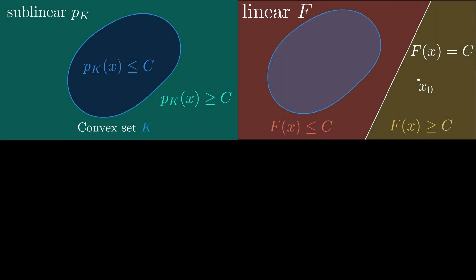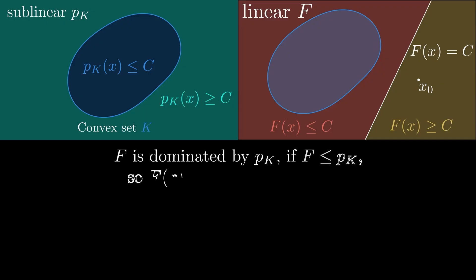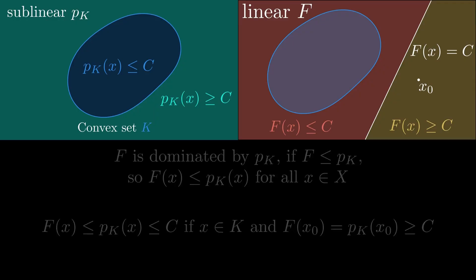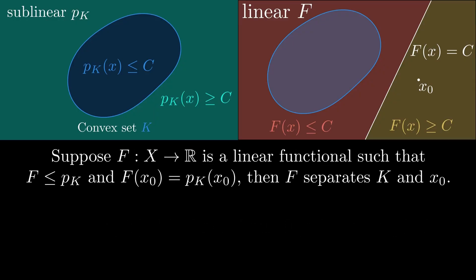Now let's connect these two concepts. We say that a sublinear functional dominates a linear functional if this inequality is satisfied. When we plug in a point in the convex set, we see that this inequality already implies that the convex set is on one side of the hyperplane induced by the linear functional. We only have to guarantee that the point is on the other side. We can do this by requiring that the value of f at x₀ equals the value of p_K at x₀. Since the point is not in the convex set, this is greater or equal to C. So a linear functional which is dominated by p_K and has this value at x₀ separates K and the point.